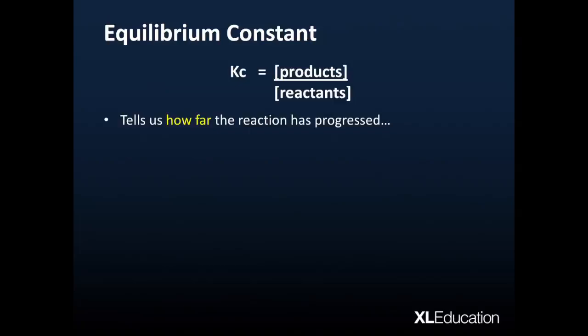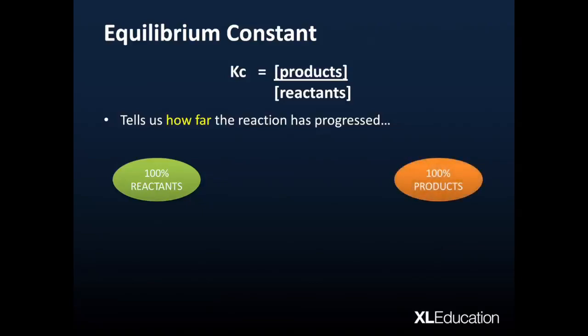Let's consider when the reaction starts, we will have 100% reactants. And given that it's a reversible reaction, it's going to start to make its way towards 100% products. But of course, the reverse reaction is going to kick in, and it's never going to get exactly there. And so it's going to settle somewhere in between the two. Now, where it settles is how far the reaction has progressed. Is it further towards the left-hand side, more reactants, or is it further towards the right, with more products? That's what Kc is going to tell us.